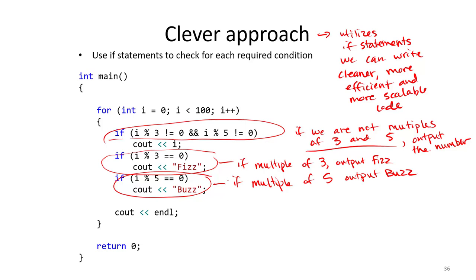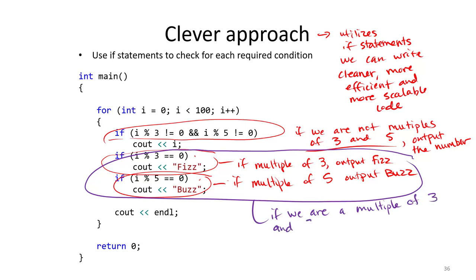Now wait a minute. How do we check whether we're a multiple of 3 and 5? Well, if we are a multiple of 3 and 5, both if statements will trigger.